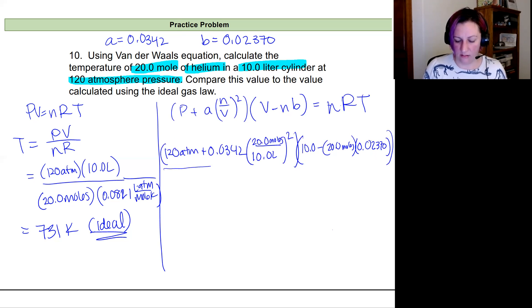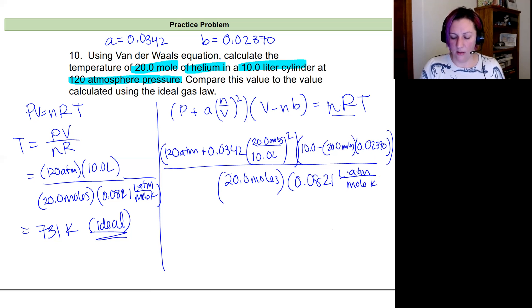All right. I'm going to divide all of that then by n and R. So I've got my 20.0 moles and R is still 0.0821 liters times atmospheres divided by moles Kelvin. And this all equals T.